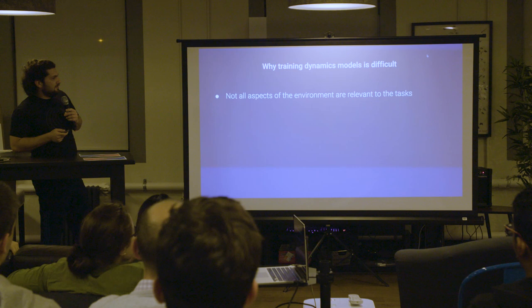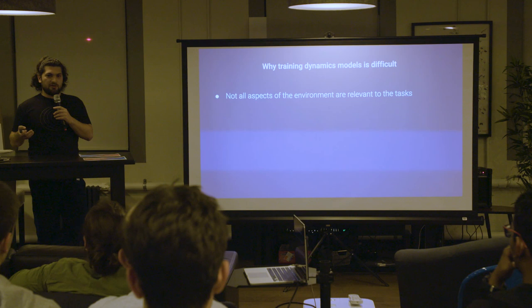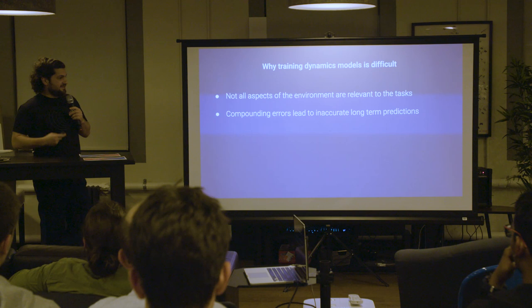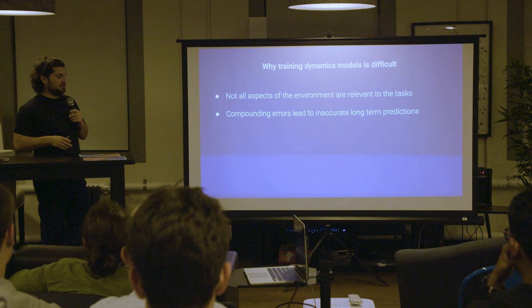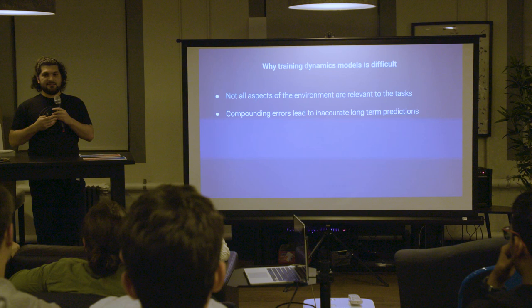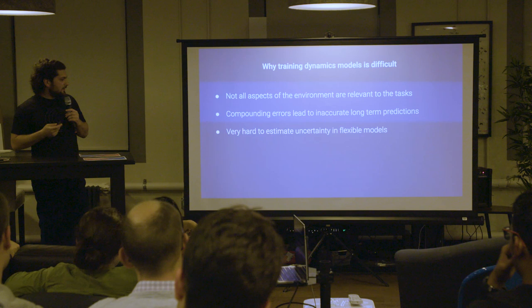Some difficulties of training a dynamics model: first, not all aspects of the environment might be relevant for any task you care about. For instance, if you're a house robot, what's playing on the TV will never be helpful but might be very complicated to model, wasting capacity. As I showed earlier, compounding errors lead to very bad predictions over long horizons — one of the main issues is that if you unroll models for longer horizons, they become so far from the truth that training on them doesn't work, even though long-horizon goals are important for planning.